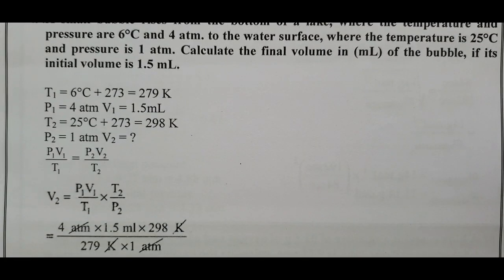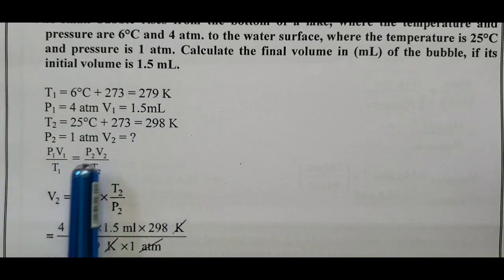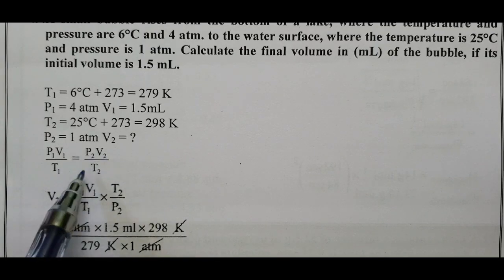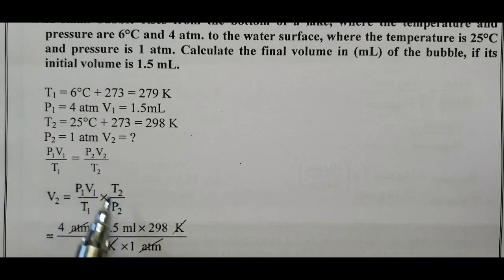P2 equals 1 atm. V2 is what we need to calculate. We know P1V1 divided by T1 equals P2V2 divided by T2. We have to determine V2. That's why T2 and P2 are on the left-hand side, T2 in the numerator, P2 in the denominator.